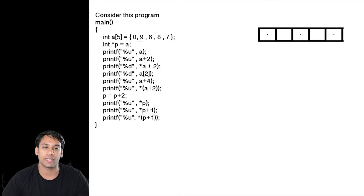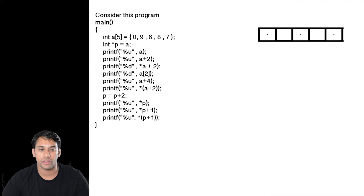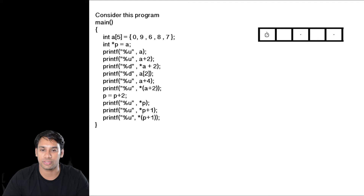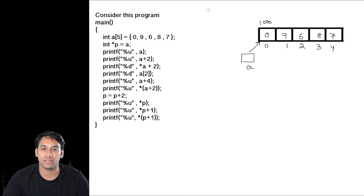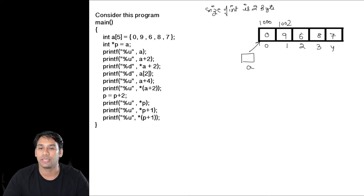In this program, I have taken an array of size 5, storing 5 different integer numbers: 0, 9, 6, 8, and 7 at index locations 0 through 4, pointed to by A. If the base address is 1000 and integer size is 2 bytes, then the address of index 1 is 1002, index 2 is 1004, index 3 is 1006, and index 4 is 1008.